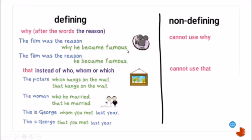Another word we can use with relative clauses is 'why,' but it is used only after the word 'the reason' to specify what the reason is. Example: 'The fear was the reason why he became famous.' Just as with 'when,' we can omit 'why': 'The fear was the reason he became famous' — the idea remains the same.